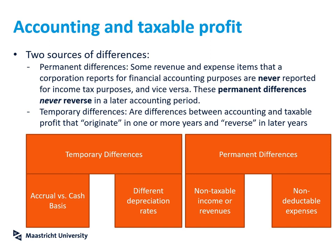You can also have the opposite — non-taxable income or revenues. For example, a government subsidy would be recognized as income under IFRS, but it may not be taxable. If the government gives money to incentivize opening a local branch, the company receives the subsidy and pays no tax on it. This is also a permanent difference: the subsidy is recognized as income under IFRS but will never be recognized in the tax statements.